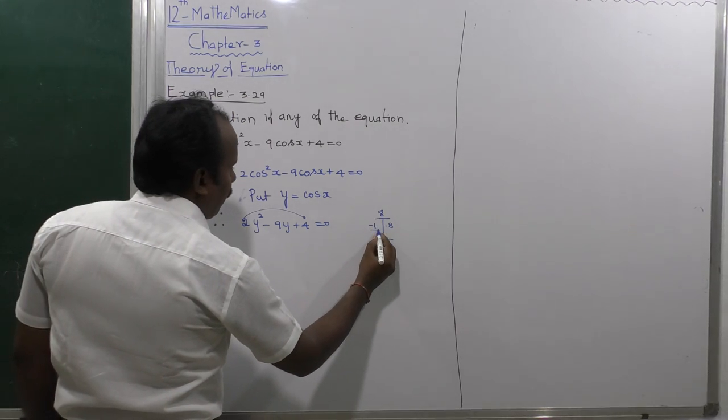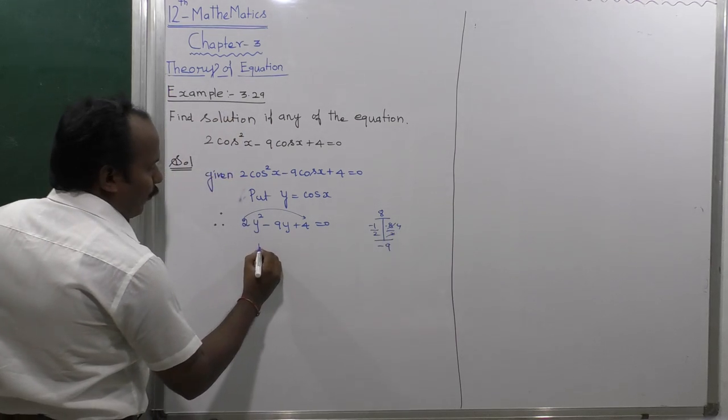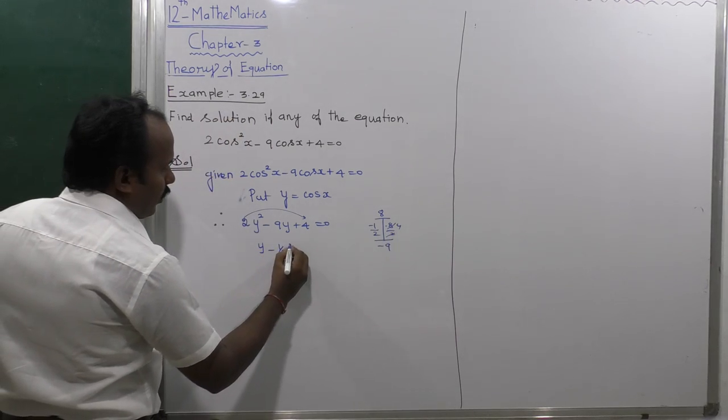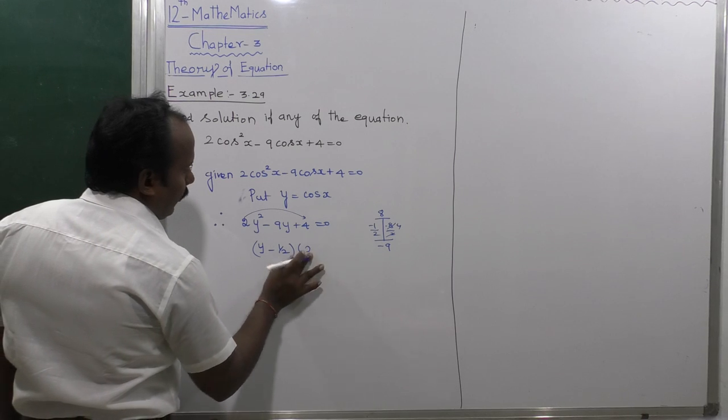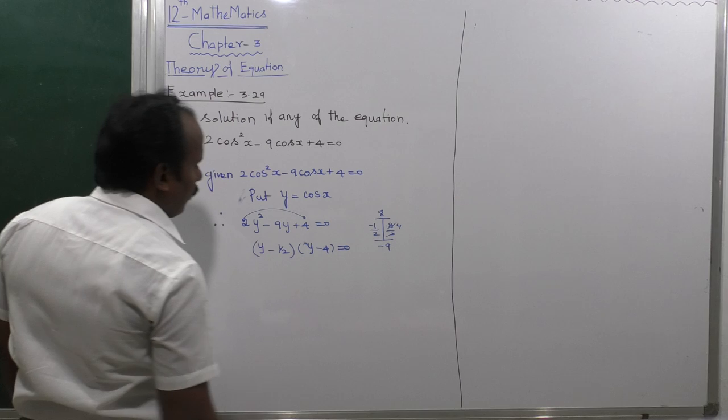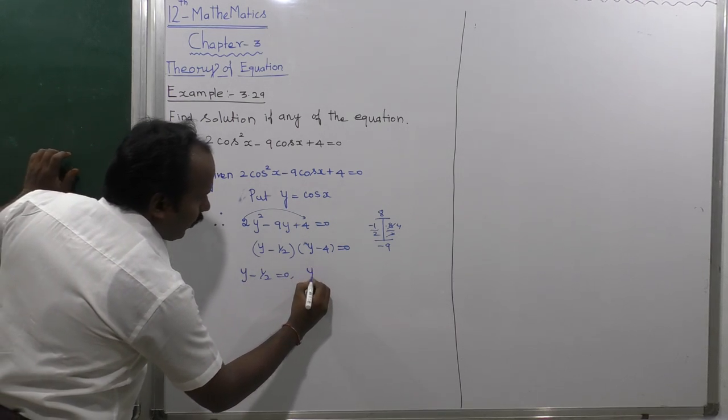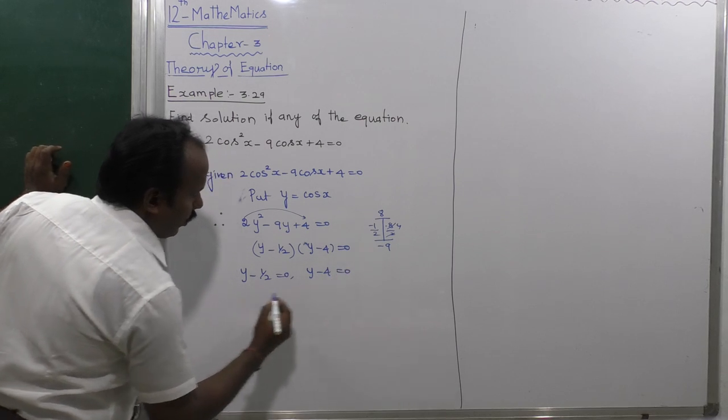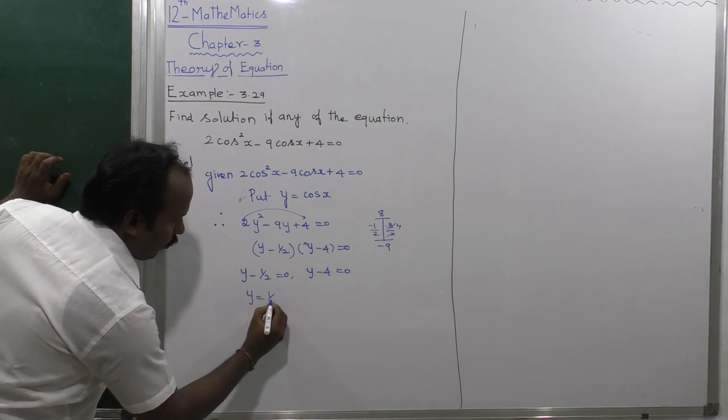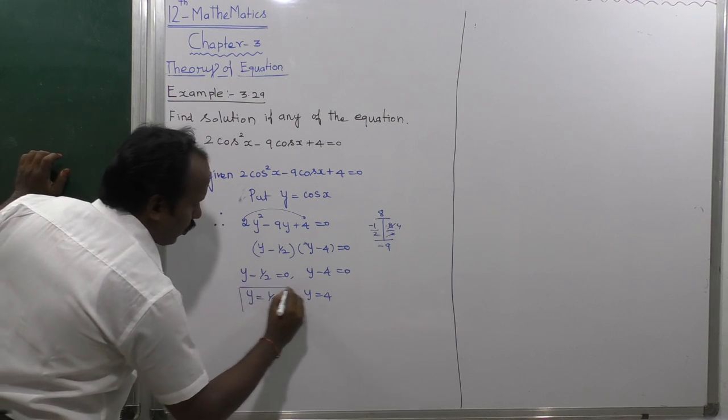Divided by 2, this becomes (y - 1/2)(y - 4) = 0. The first factor: y - 1/2 = 0, second factor: y - 4 = 0. Then y = 1/2 or y = 4. We get two solutions.